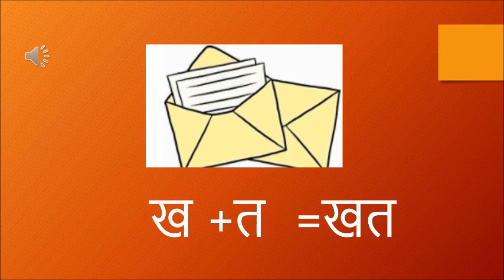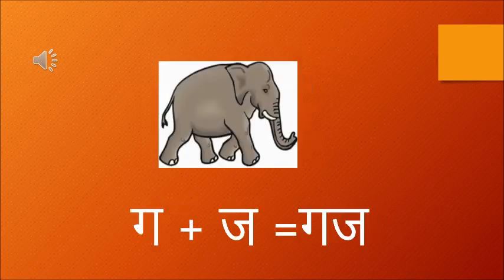Next is kha aur ta. Kha — khargosh wala kha — aur ta — tarbuj wala ta. Kha aur ta ek saath milake khat hota hai. Then it's ga aur ja — gamla wala ga and jahaj wala ja. So together ga and ja make gaj. Gaj means an elephant.